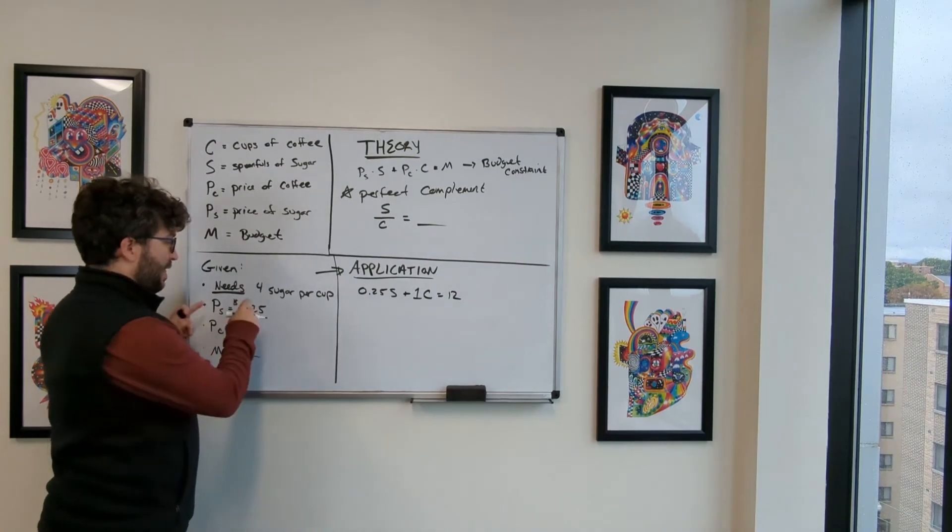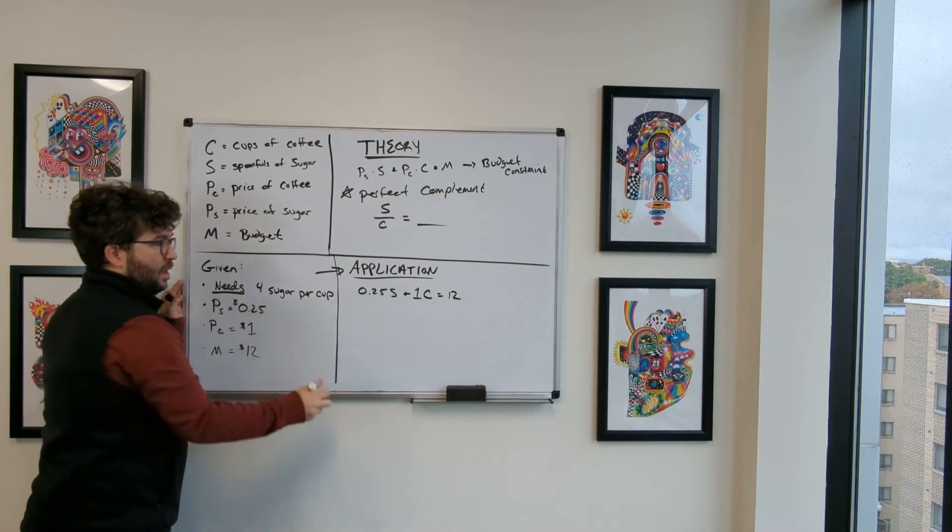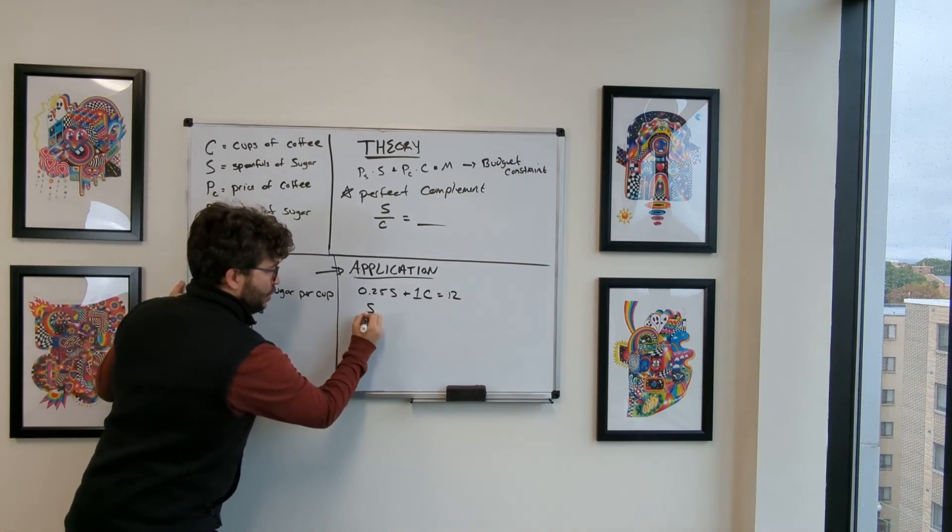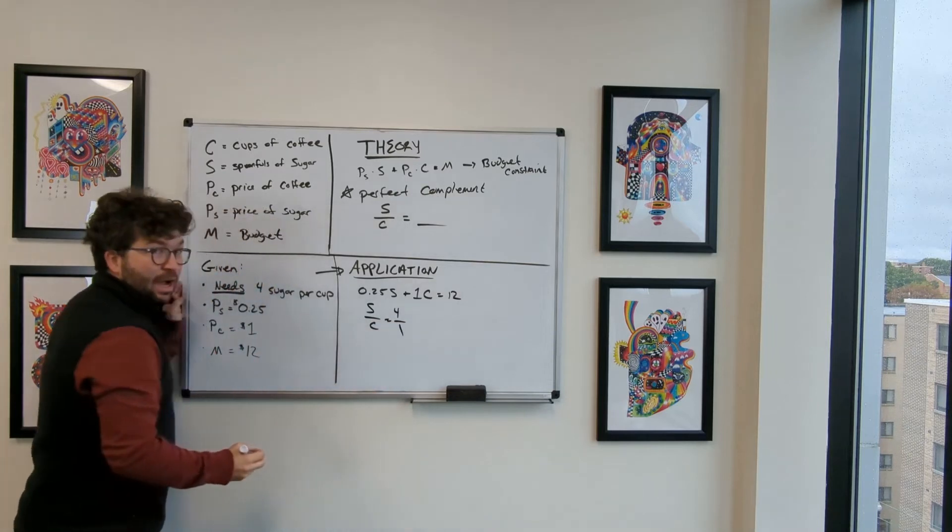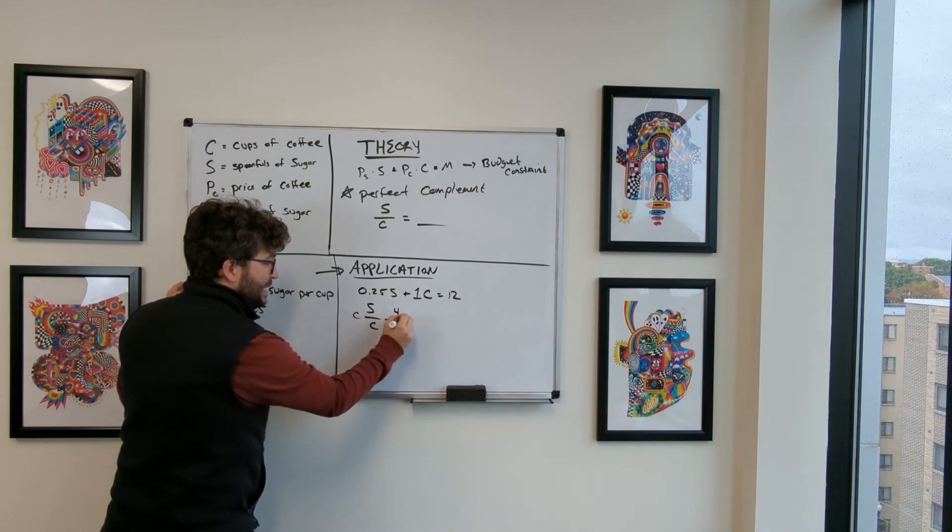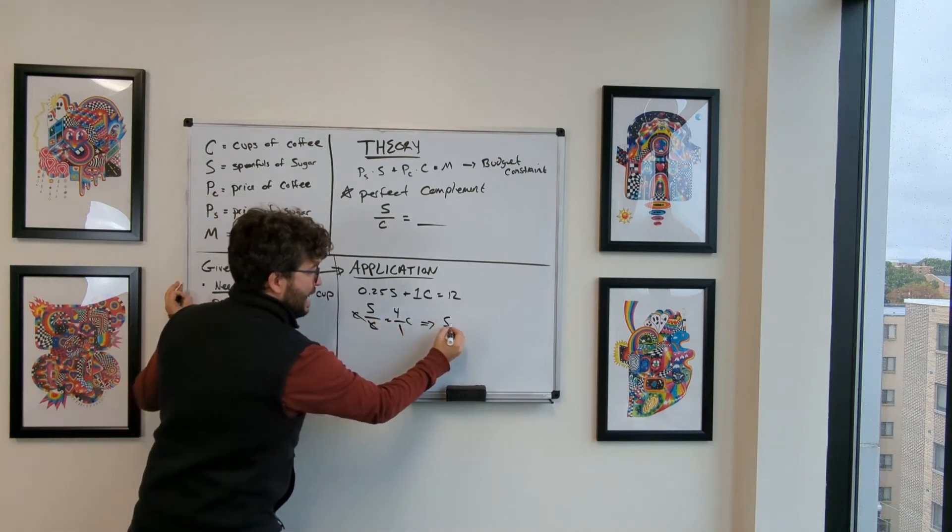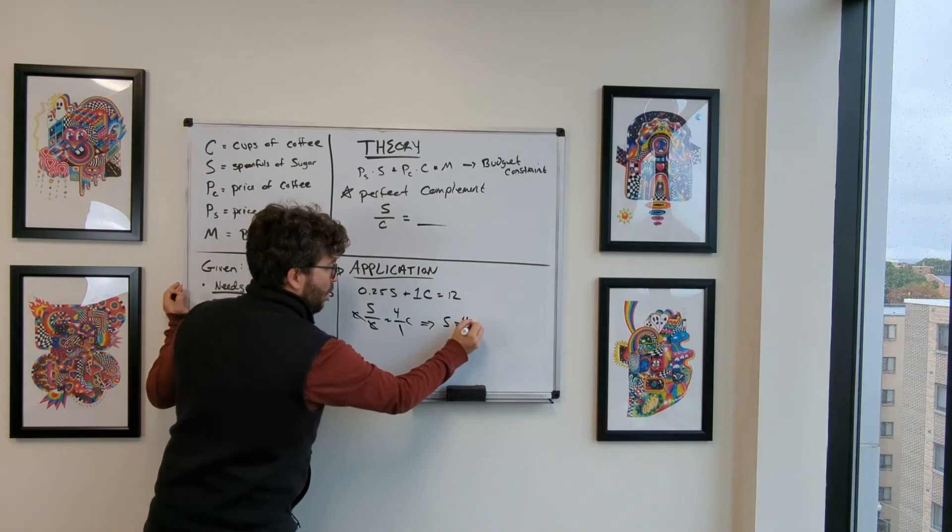We also know with the data that are given that four sugar per a single cup of coffee. So that means if I have sugar per cup, I need four sugar per one cup of coffee. Now I'm going to assume you have your basic algebra knowledge down. So I'm going to multiply C to both sides, get rid of this C. And this is showing me that S equals four C.